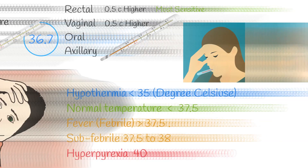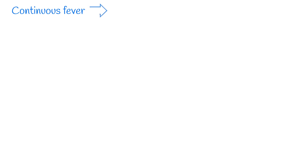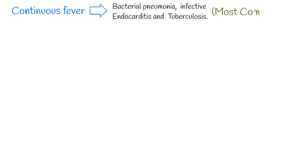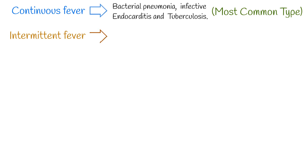There are different types of fever. Continuous fever is a type or pattern of fever in which temperature does not touch the baseline and remains above normal throughout the day. Such fever is mostly caused by infections. Intermittent fever is where the temperature elevation is present only for a certain period, then normal for several hours.